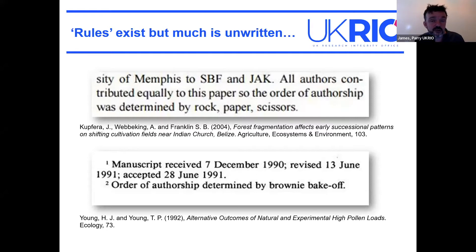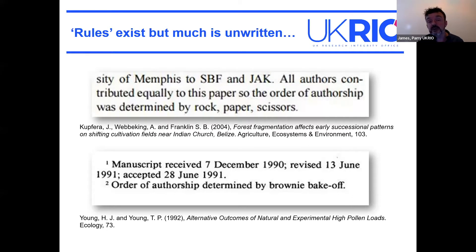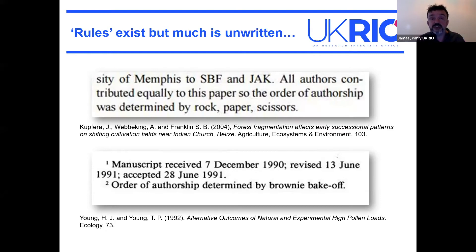There are no universal rules for deciding authorship order and no agreement across disciplines on whether the order even matters. In some disciplines it's ordered by level of contribution; in others it's alphabetical. In some disciplines being the corresponding author is considered a great honour; in others it's seen as having burdens attached. Authorship is fundamental to research careers — our outputs are assessed on our authorship and research publications in many ways. There's lots of work being done to move away from that model because the pressures it imposes are very real. It's called publish or perish for a reason.